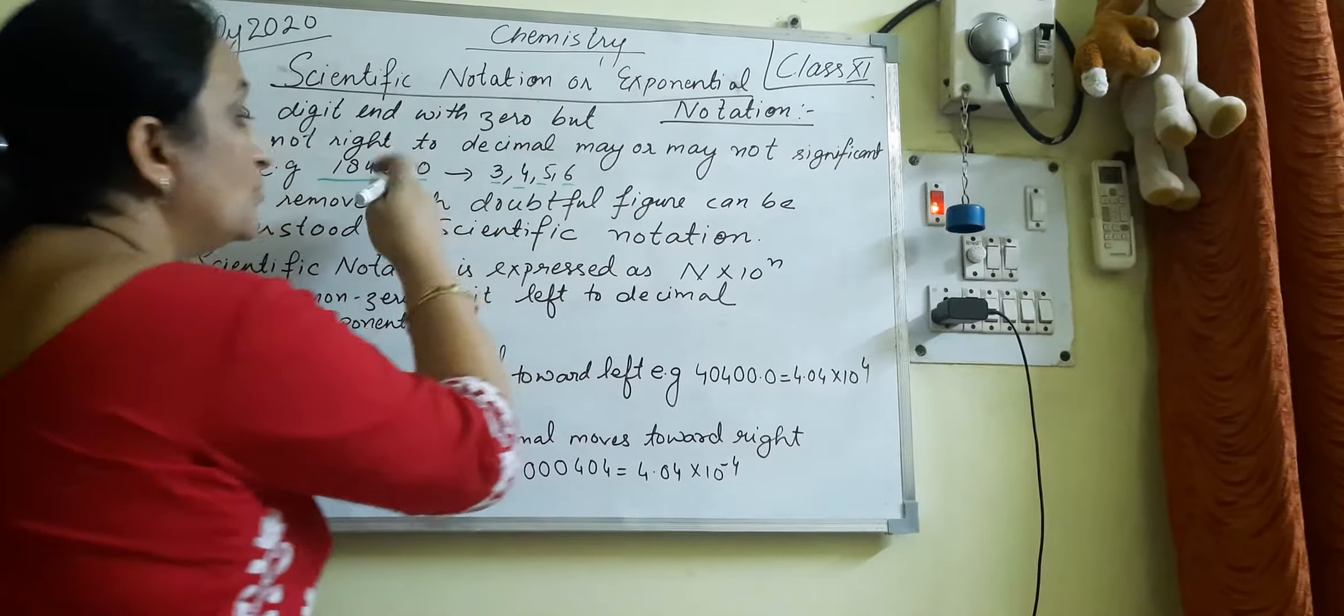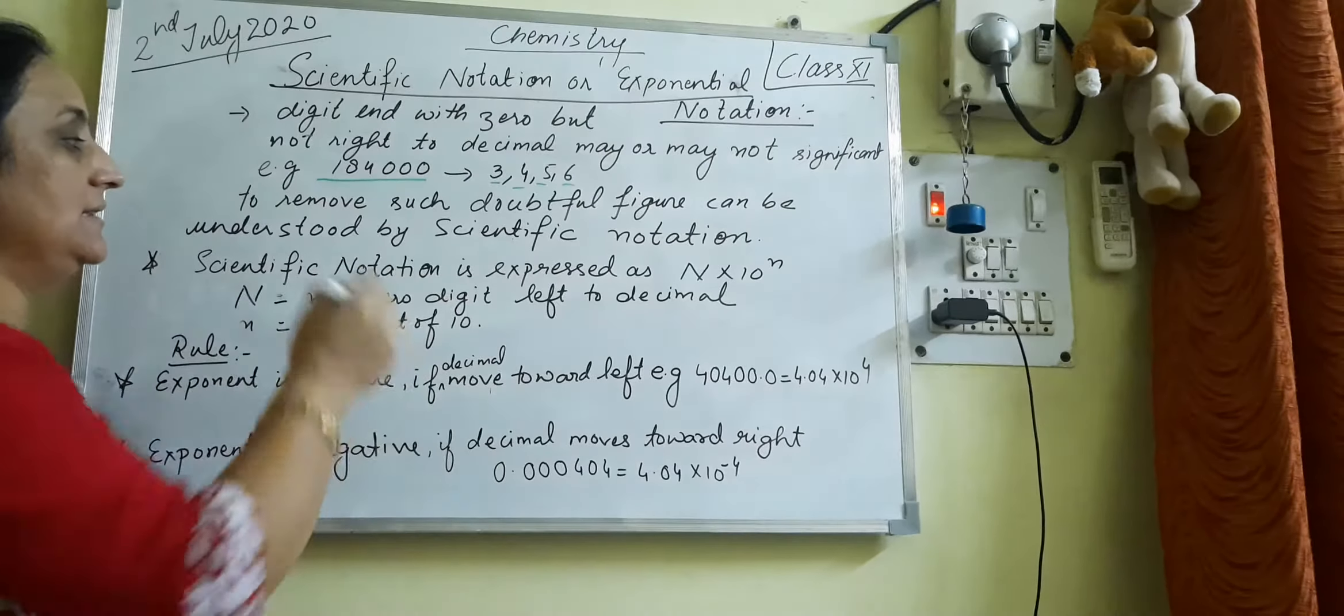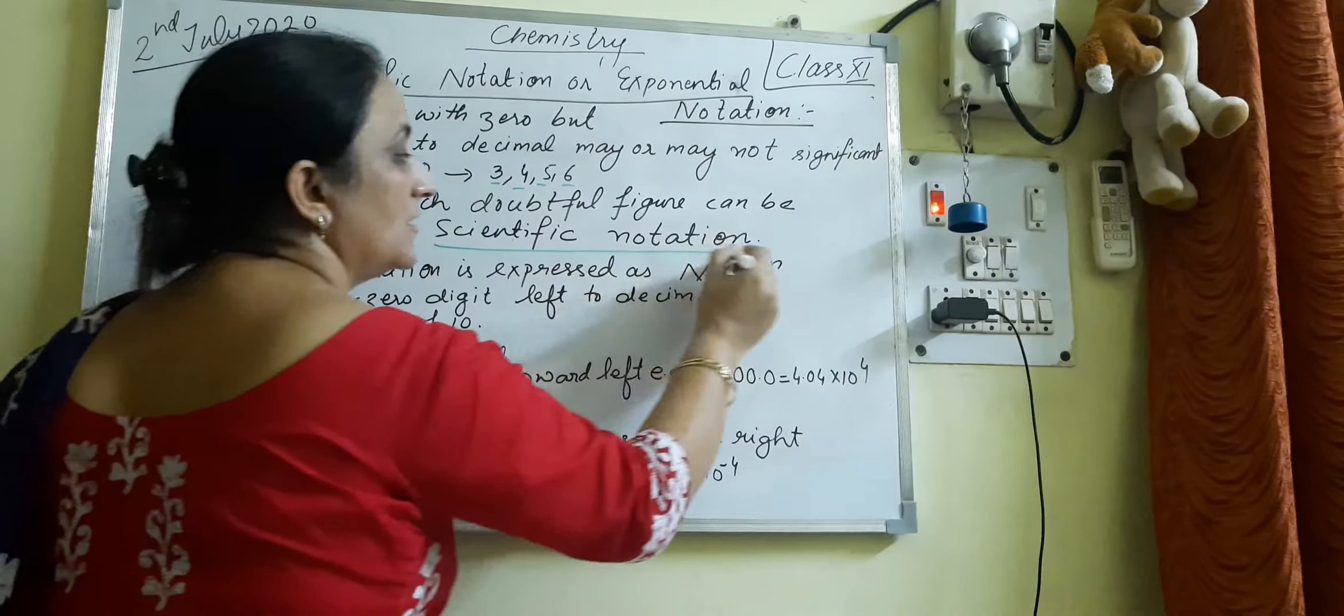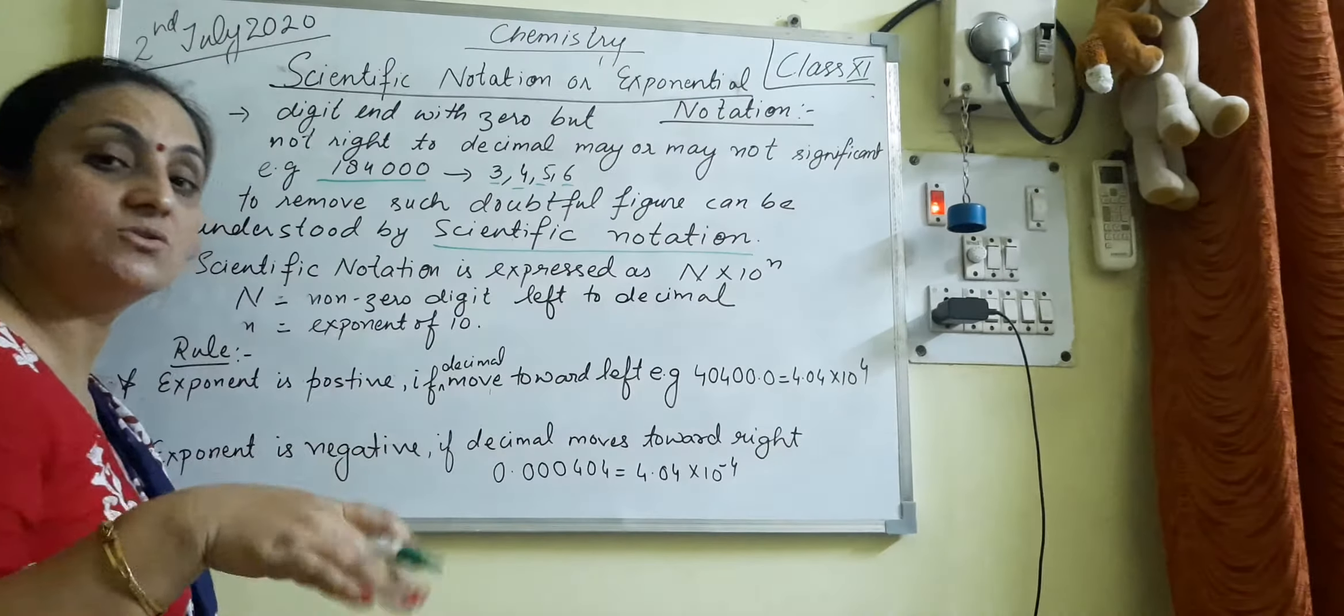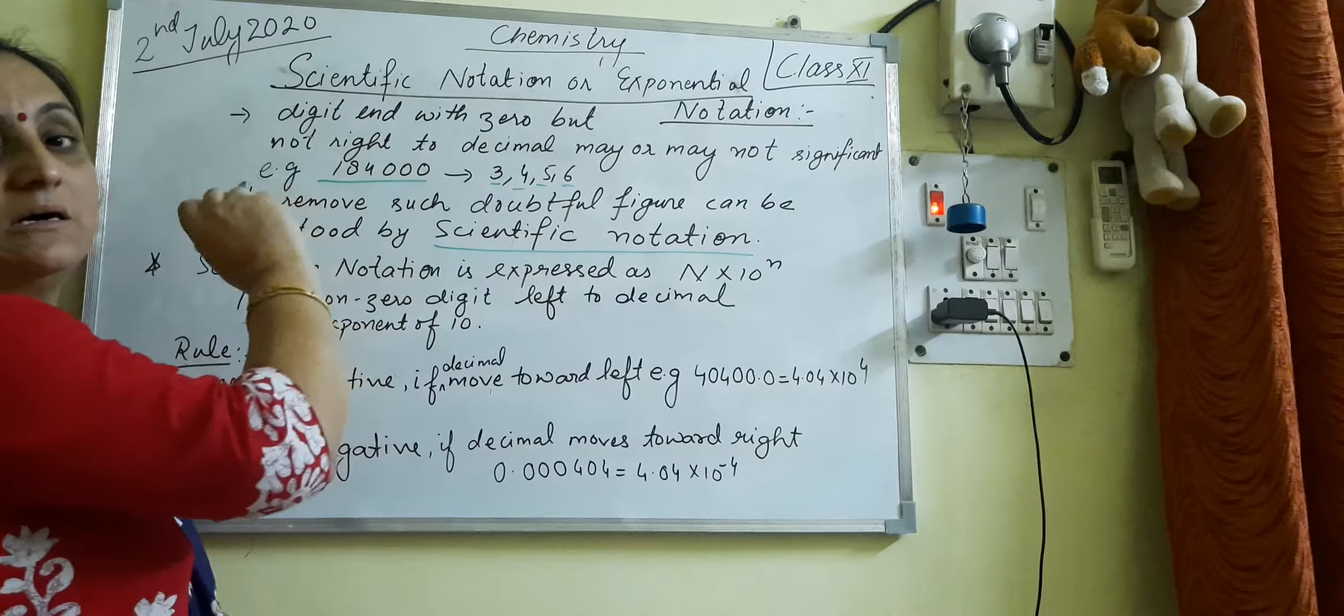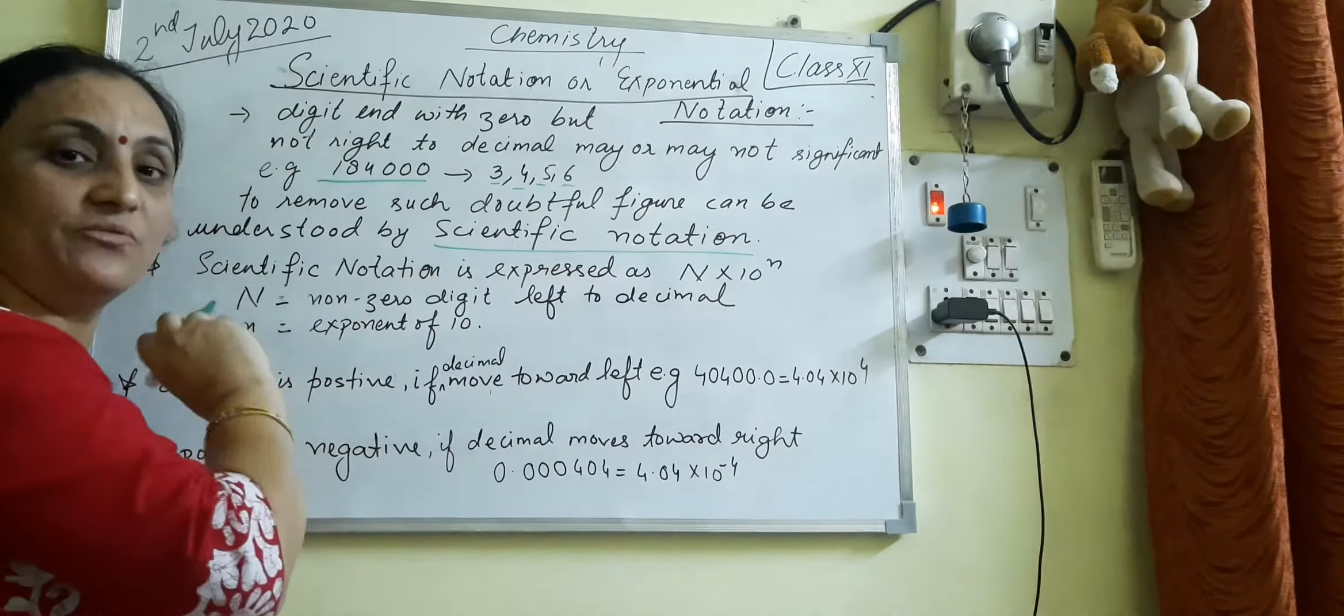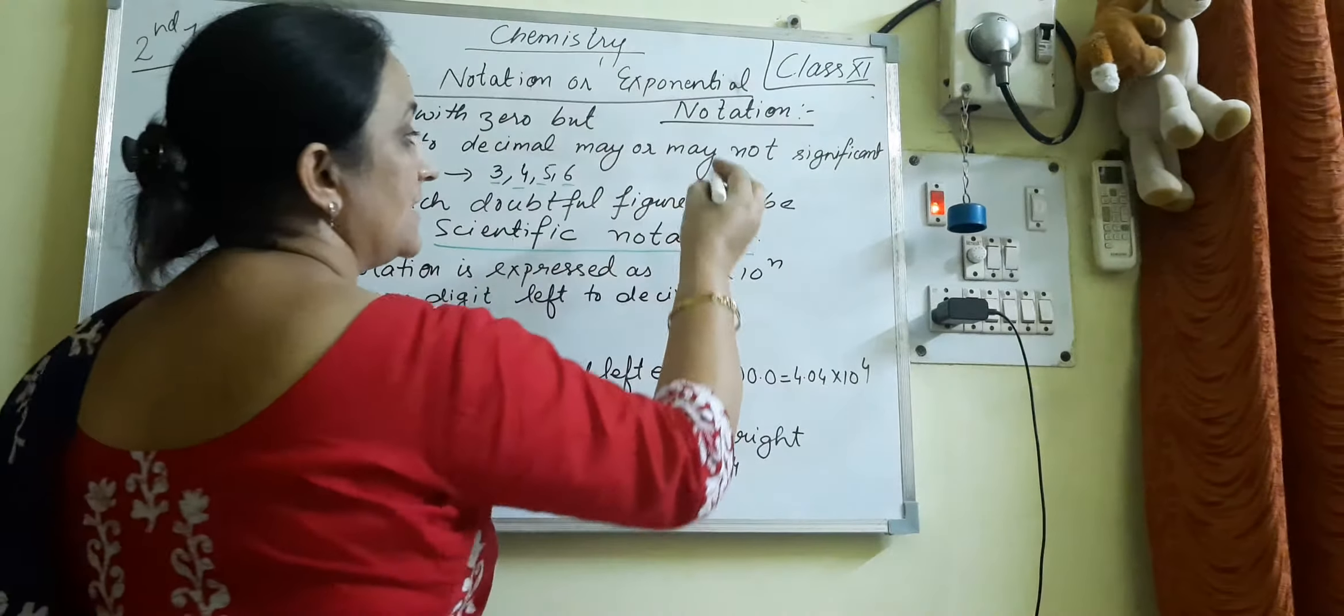So to remove such type of doubtfulness, to remove these doubts, there is the introduction of scientific notations. Why is there a production of scientific notations? To remove the doubtful, the doubting of such type of figures.